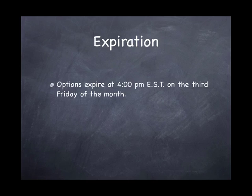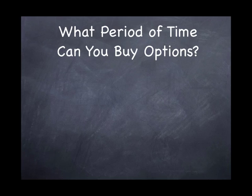As far as expiration, there's some confusion at times as to when expiration is. Options expire at 4 o'clock Eastern Time on the third Friday of the month. The actual set point is the Saturday following the third Friday of the month, but for our purposes, it's the third Friday of the month.